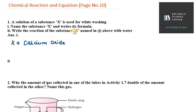And then it says write its formula. Its formula is calcium Ca, oxide is O. So this is the formula for it. Second is write the reaction of the substance X named in first above with water.